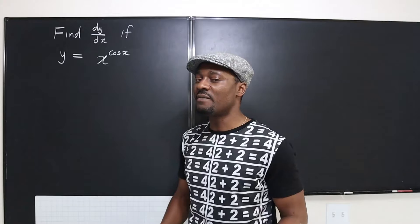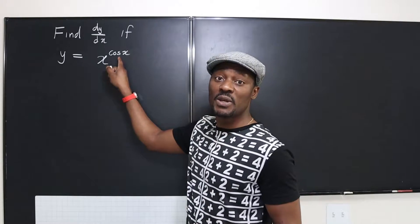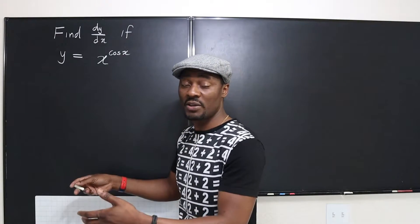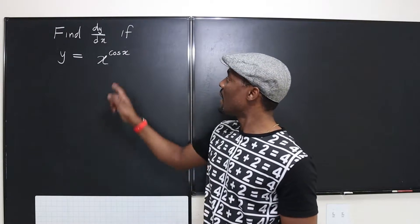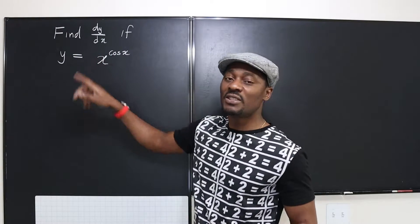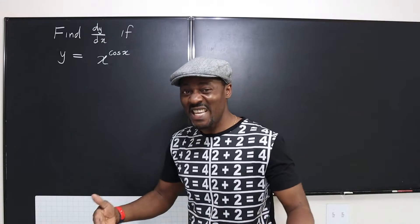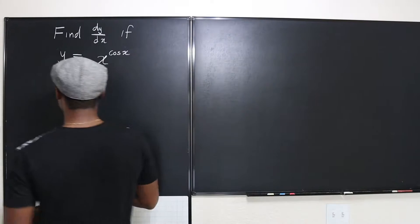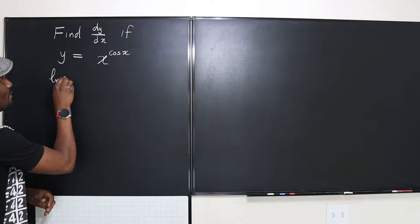If you've watched other videos, I've explained that any time x is not raised to a constant but raised to another function of x, you should introduce natural logarithms because that will help you drop this down. It doesn't have to be natural logarithms, but it's just the easiest for us to deal with. So let's take the natural logarithm of both sides.